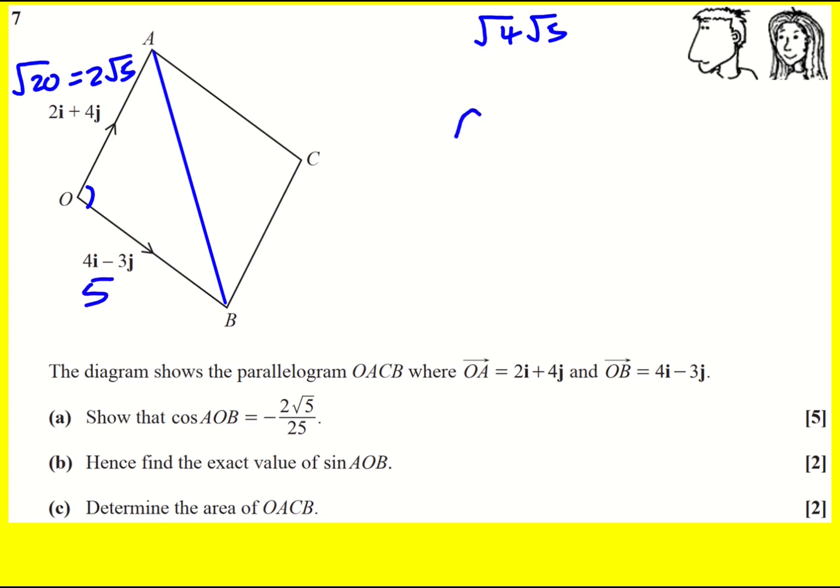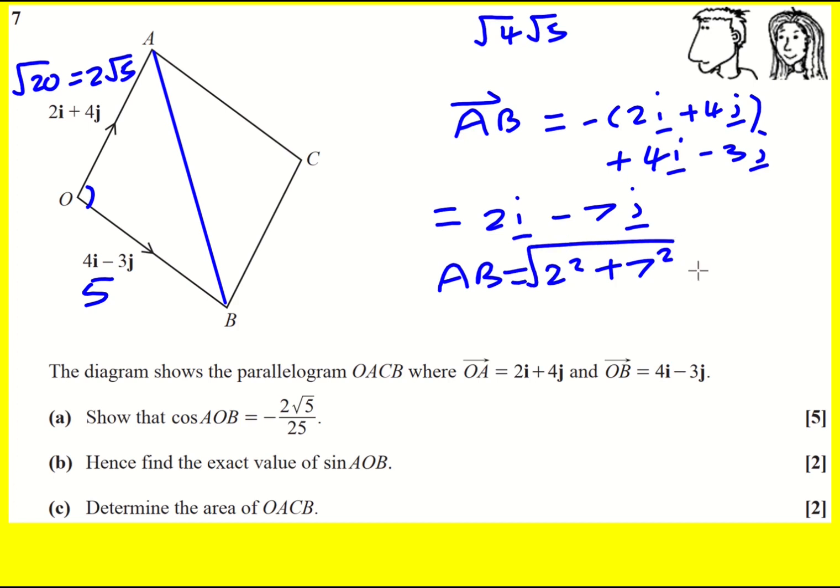All right, we're not quite there though. We also need to work out the length of AB to use the cosine rule. We need all three sides. So AB is going to be minus 2i plus 4j, because we're going in the opposite direction, then plus 4i minus 3j. You could of course work out BA instead. We're doing the distance at the end of the day, it's not going to matter, but I've gone with AB. So I'm going to get minus 2i plus 4i, I'm going to get 2i, I'm going to get minus 4j minus 3j, minus 7j. And then AB is going to be 2 squared plus 7 squared, so 4 plus 49, root 53.